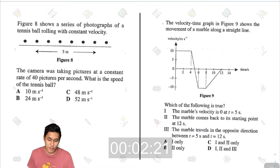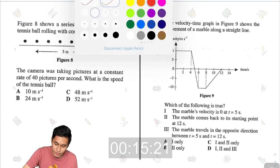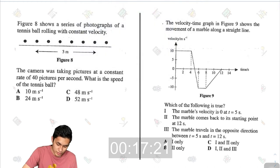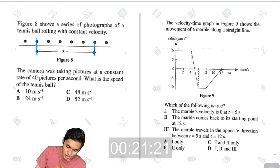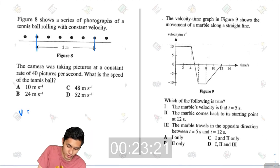Figure 8 shows a series of photographs of a tennis ball rolling with constant velocity. The camera was taking pictures at a constant rate of 40 pictures per second. What is the speed of the tennis ball? This is sort of like a tickle tape situation. 3 meters is from here to here, that is the distance. We want the speed, so velocity is equal to distance or displacement divided by time. We have 3 meters.